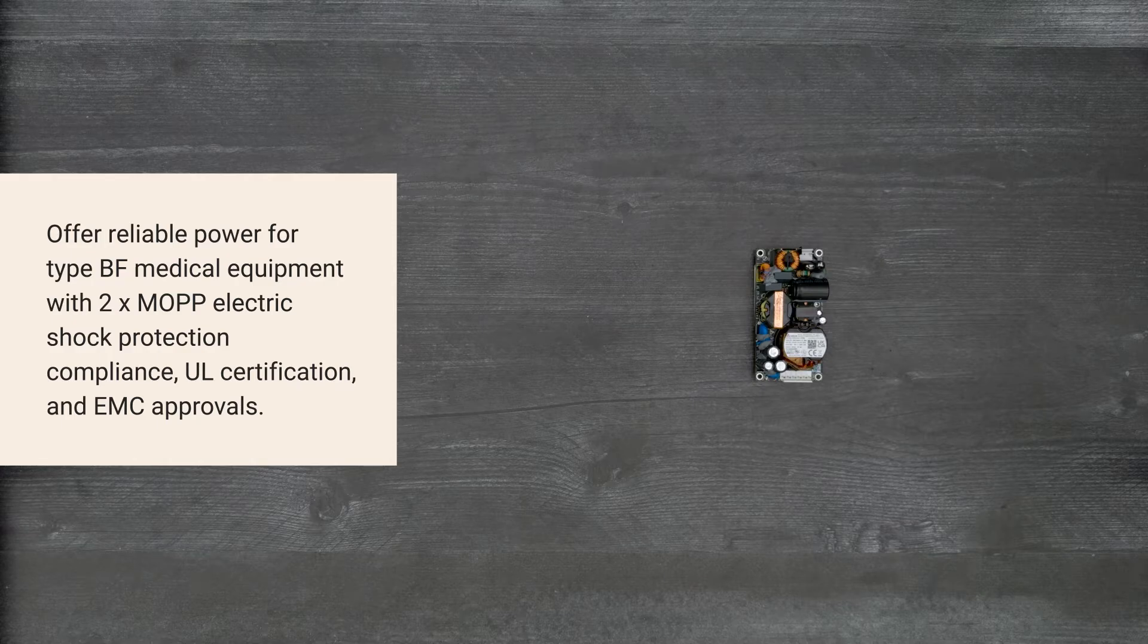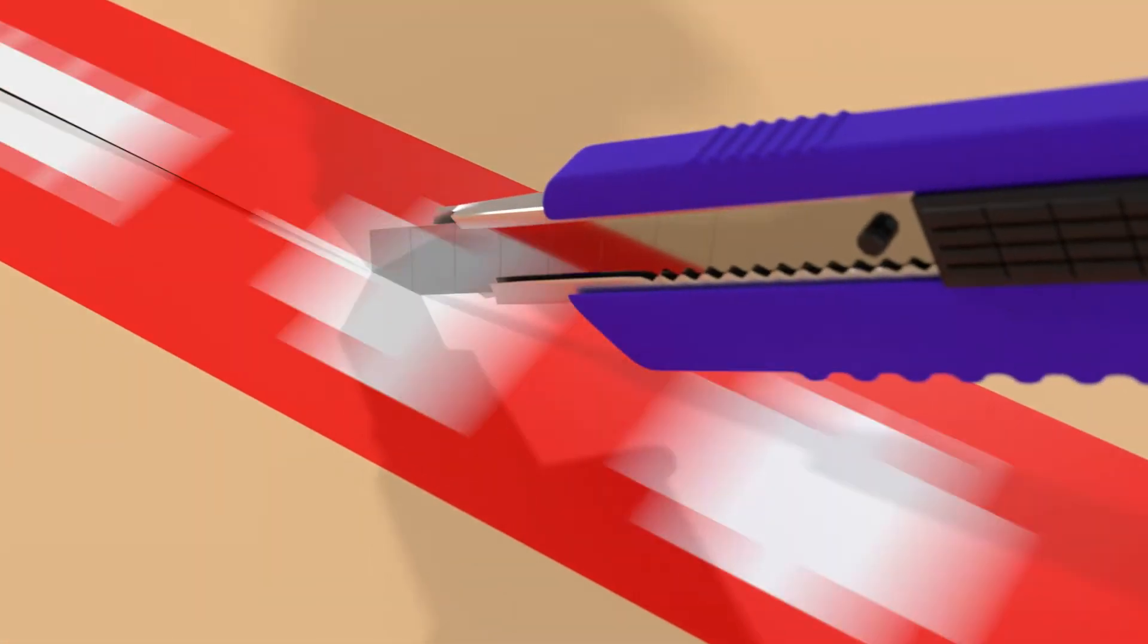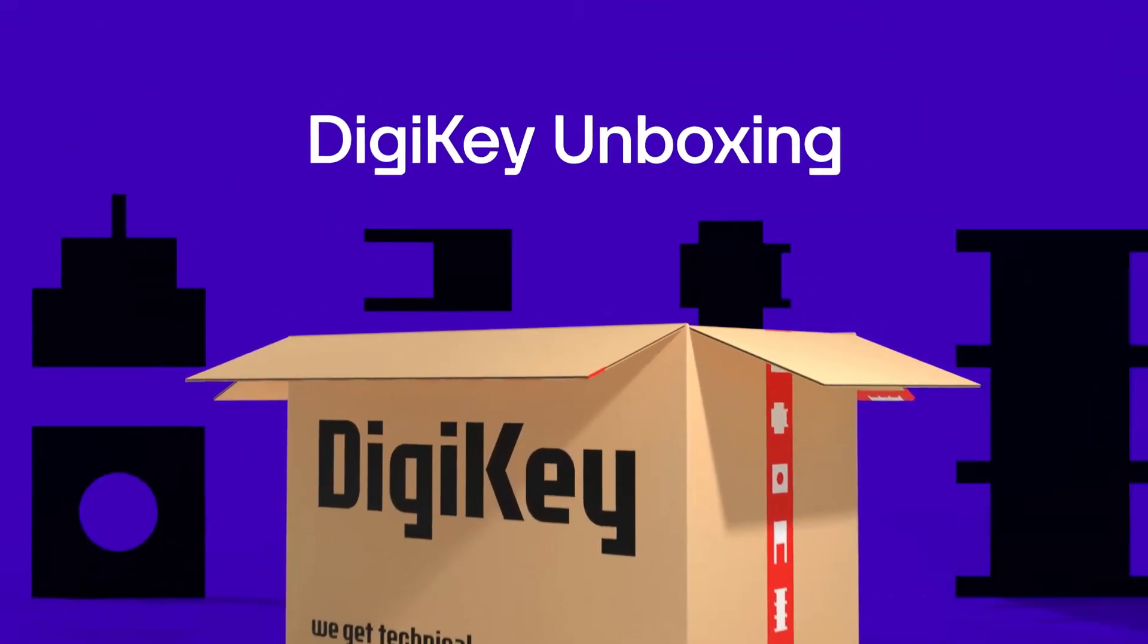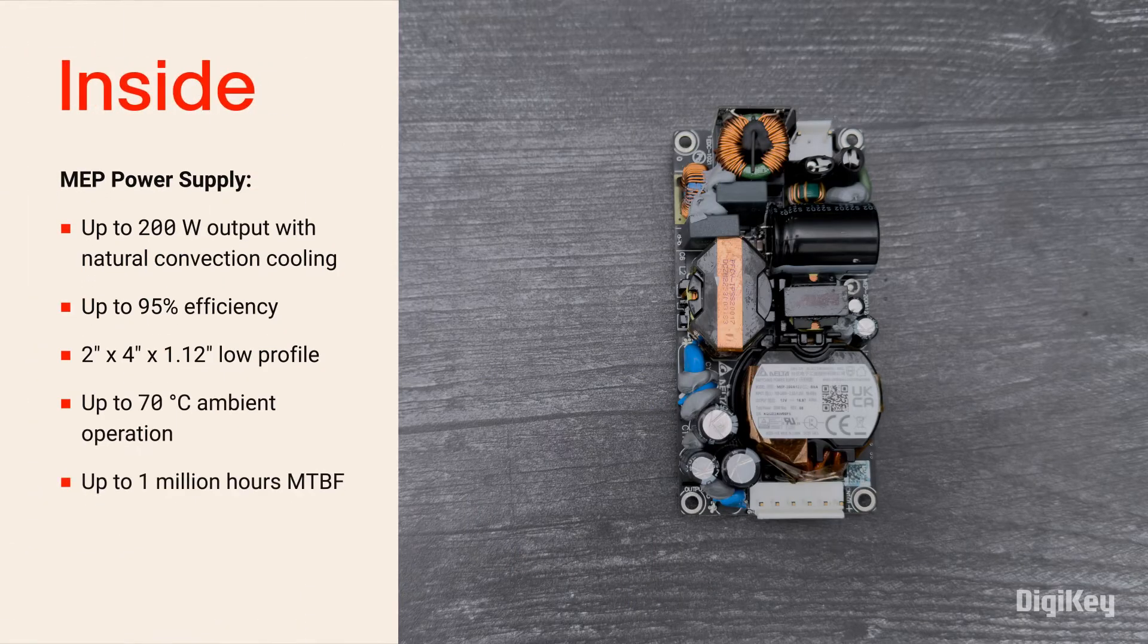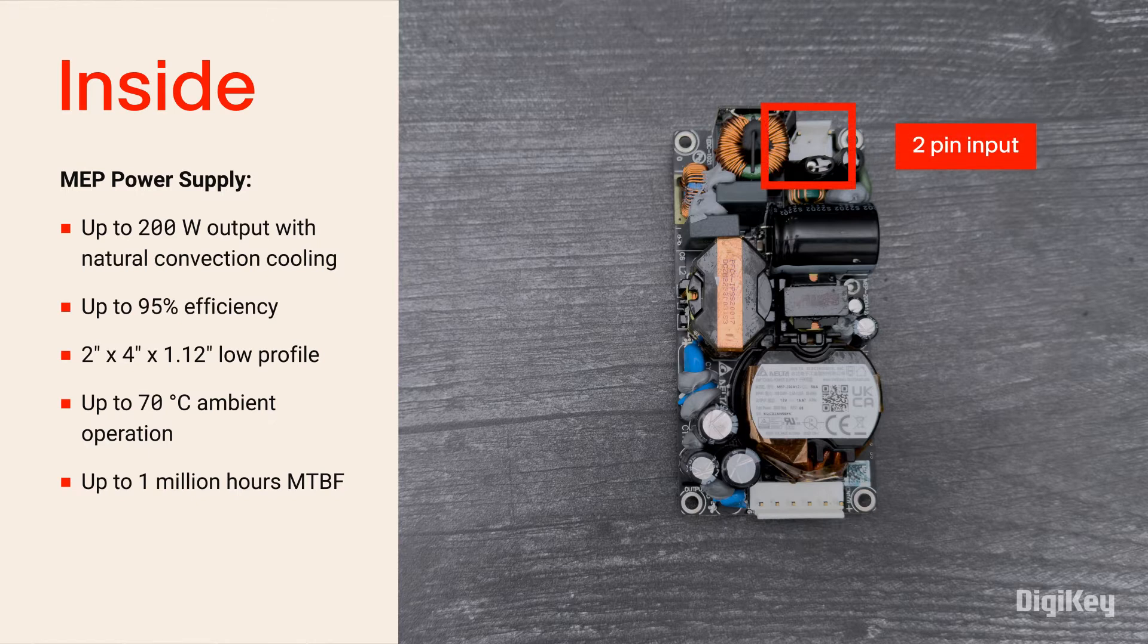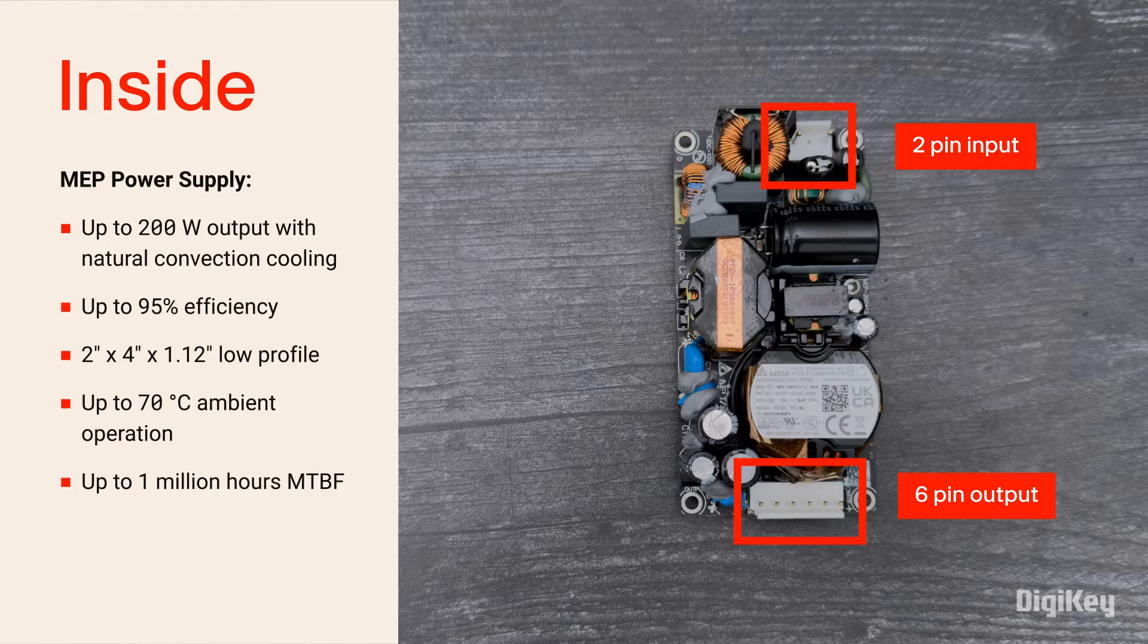So let's get started. Inside the box, you'll find the open frame MEP power supply with a two pin input connector and a six pin output connector for up to 200 watts at 95% maximum efficiency.